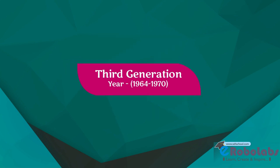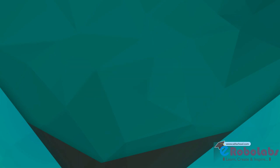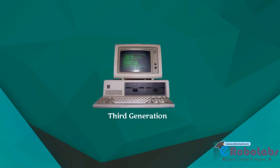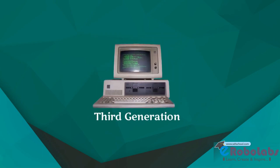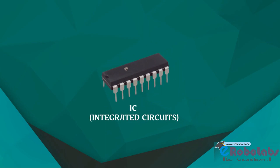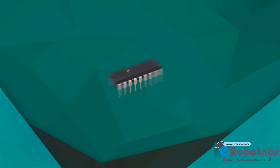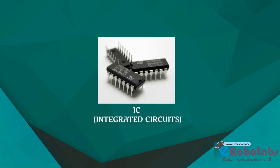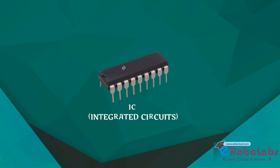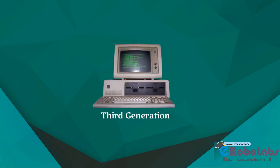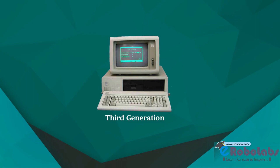Third generation, year 1964 to 1970. The third generation computers were invented in the year 1964. In this generation of computers, IC — Integrated Circuits — were used as the electronic component. The development of IC gave birth to a new field of microelectronics. The main advantage of IC is not only the small size, but also superior performance and reliability than previous circuits. It was first developed by T.S. Kilby. This generation of computers had huge storage capacity and higher calculating speed.